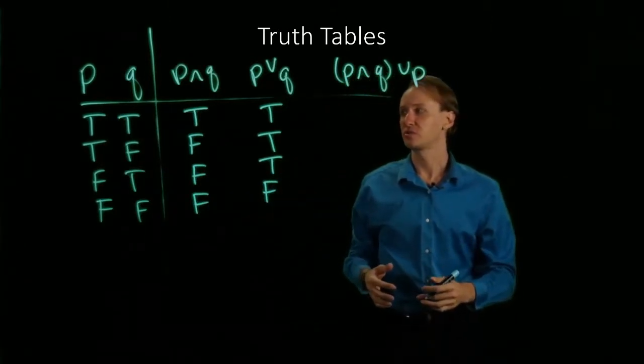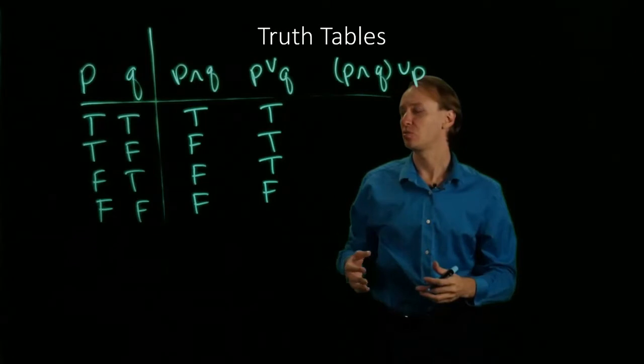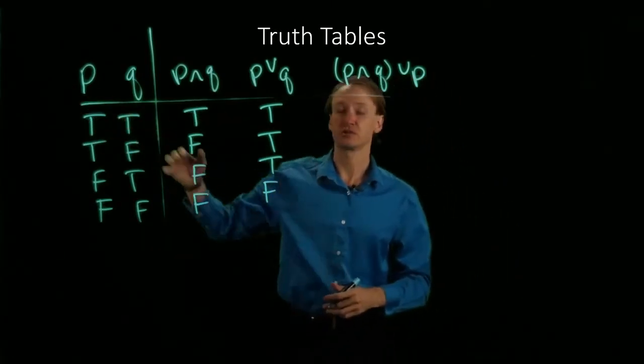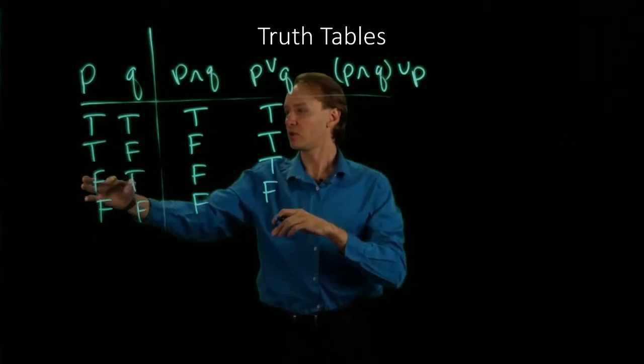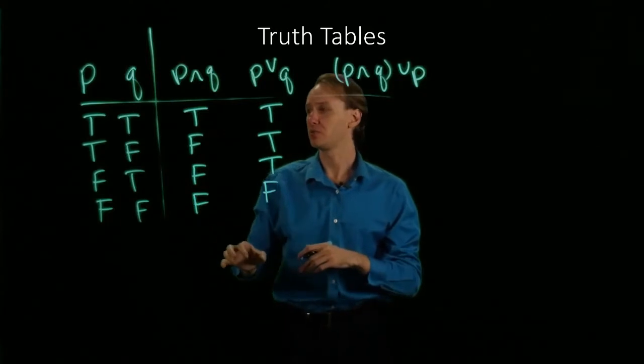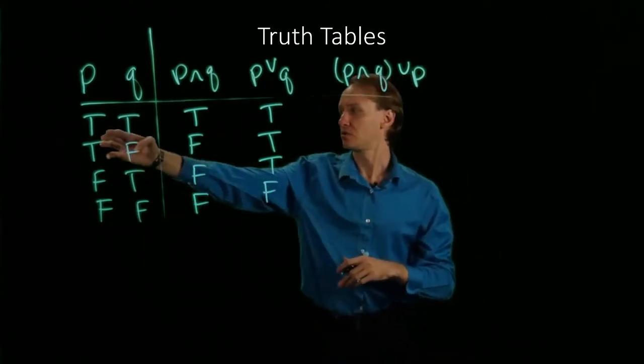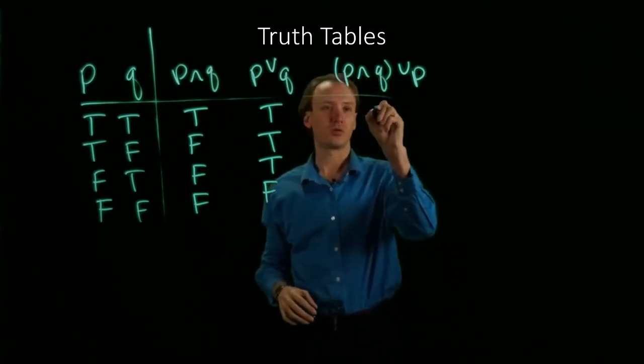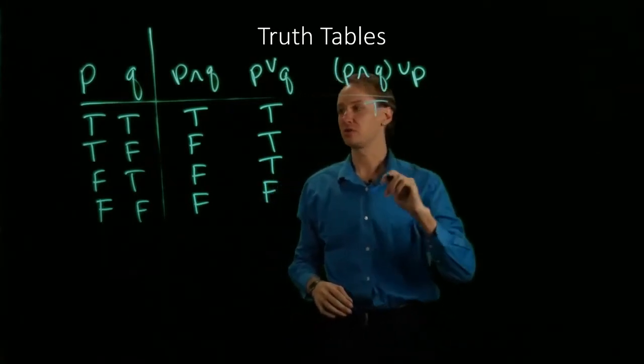This expression will be true in any case where either P AND Q is true or P is true. Here I've got all the possible values for P as well as all the possible values for P AND Q. P is true and P AND Q is true, that will mean that the OR of both of those is true.